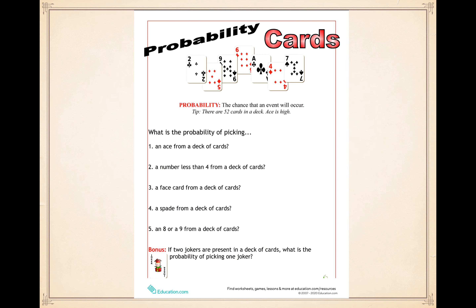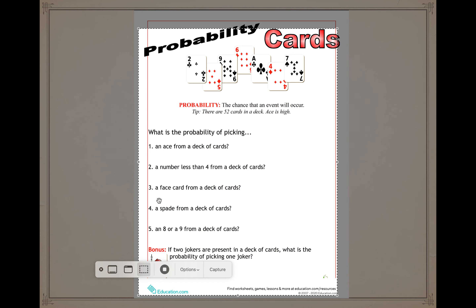Last thing is the homework — probability cards. If you don't have the sheet, copy these questions in your notebook: What is the probability of picking an ace from a deck of cards? A number less than four? A face card? A spade? An eight or nine? And the bonus question: if two jokers are present in the deck, what is the probability of picking one joker? These are the homework questions — I will send the sheet to the group. Our lesson is over — please take care and I will see you soon.